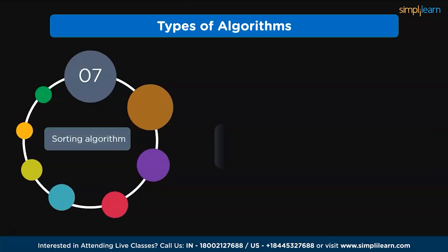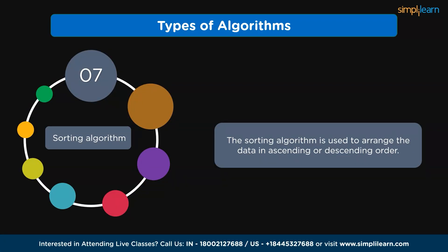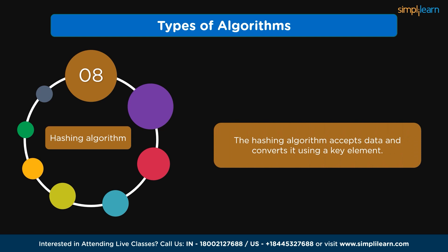Next, sorting algorithm. The sorting algorithm is used to arrange the data in ascending or descending order. Finally, we have hashing algorithm. The hashing algorithm accepts data and converts it using a key element.